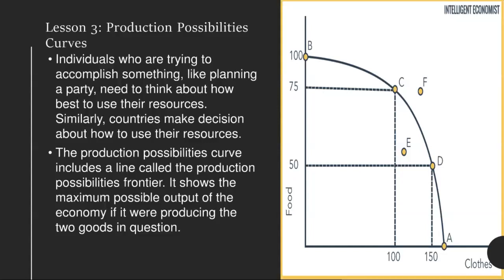Efficiency is a key term here. It means an economy is using resources in such a way as to maximize the production of goods and services. In the prior example, efficiency would mean that the most watermelons and shoes possible are being produced. The line on the curve that shows the maximum possible production is called the production possibilities frontier. If factory workers and farmers lost their jobs, fewer shoes and watermelons would be produced. In this case, the economy would suffer from under-utilization — using fewer resources than it is capable of using. A country's resources are, of course, always changing.